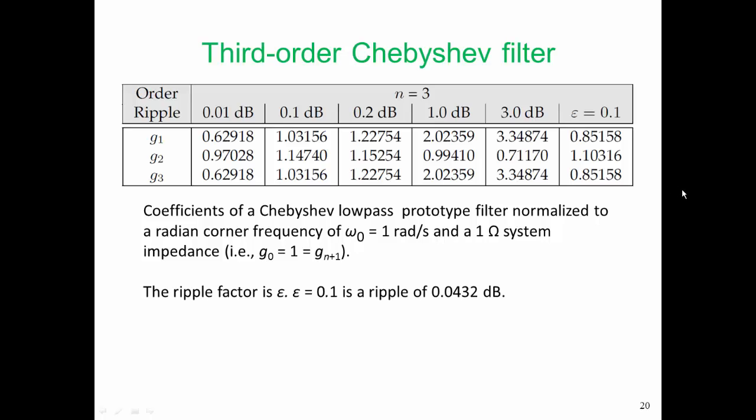Now with this filter, we were given the fact that we needed a ripple factor of 0.1. So epsilon is equal to 0.1, and this is a ripple of 0.0432 dB. And from the table, we pick off that rightmost column there.